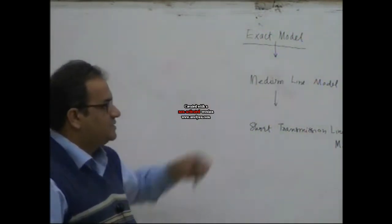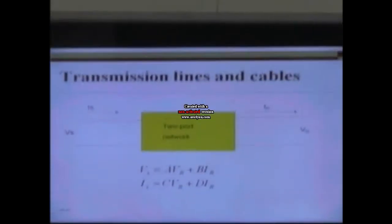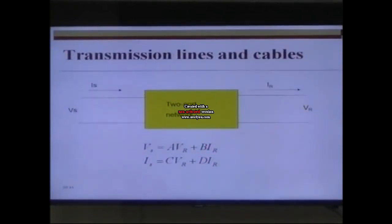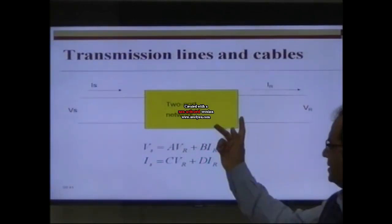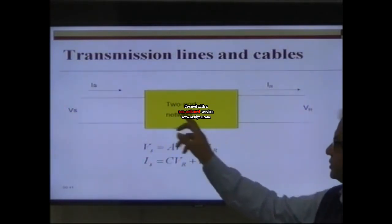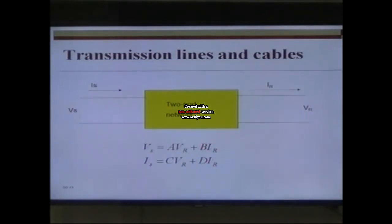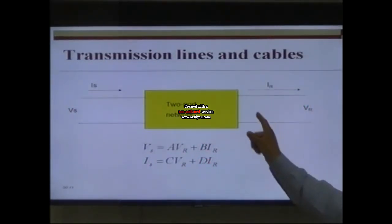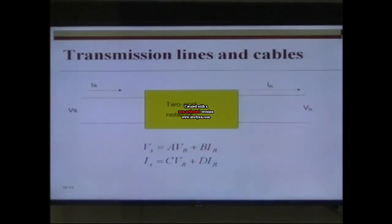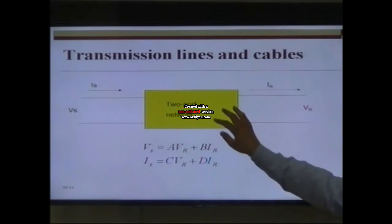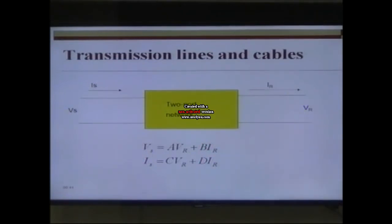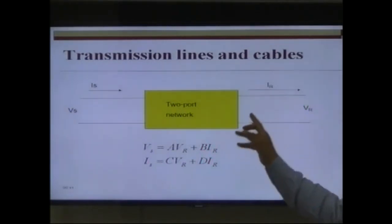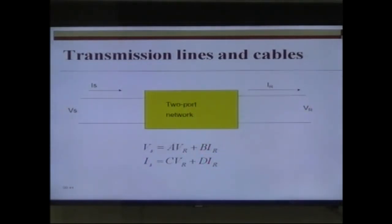All these models are based on the theory of two-port networks, which all of you must have studied. In a two-port network, we have a certain network which has two terminals at the input and two terminals at the output, and in the middle we have a network that can be anything. Here we are assuming this network to be our transmission line network.